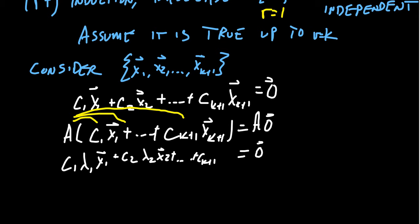And this pattern continues up until we get to C K plus 1, lambda K plus 1, X K plus 1. And this is equal to 0. So make notice of this equation right here. We're going to come back to it in just a second.